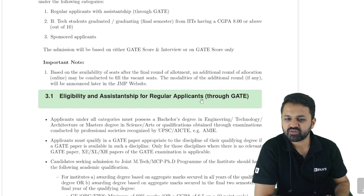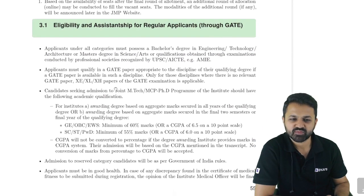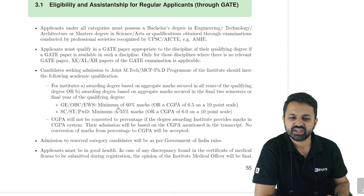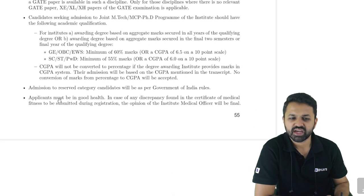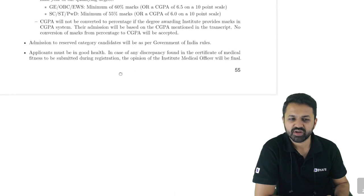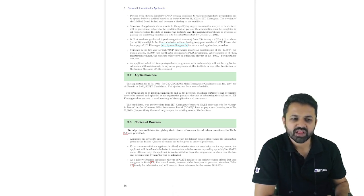Eligibility and assistantship for regular applicants through GATE: you should have the GATE scorecard and B.Tech degree, or M.Tech degree if applying for the PhD program. General category students need a minimum of 60%, and for SC/ST/PWD the minimum is 55% in the qualifying degree. CGPA will not be converted to percentage if the degree-awarding institute provides marks in CGPA system. Application fee is Rs. 500, and a stipend of Rs. 12,400 per month will be provided.